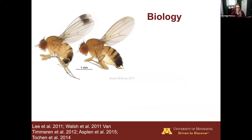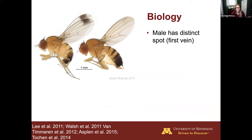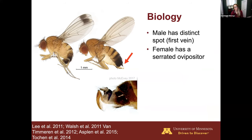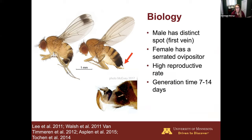Some quick key identification tools you can use: the male has a spot at the tip of the wing just over the first vein, while the female lacks this spot. Her key identifier is her serrated ovipositor, which allows her to penetrate preferred hosts for laying eggs, such as healthy fruits. They have a high reproductive rate with generation time anywhere between 7 and 14 days, and optimal development between 18 and 28 degrees Celsius.